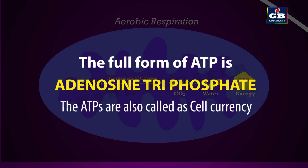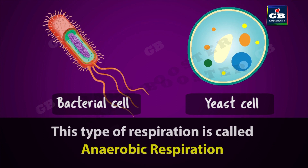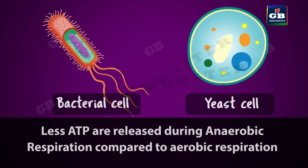For this reason, these ATPs are called as cell currency. In some organisms, oxygen is not needed for respiration. This type of respiration is called anaerobic respiration. But in anaerobic respiration, less ATPs are released when compared with aerobic respiration.